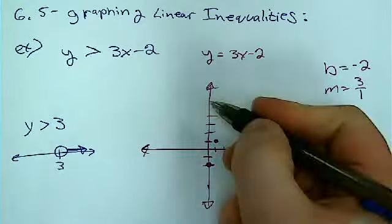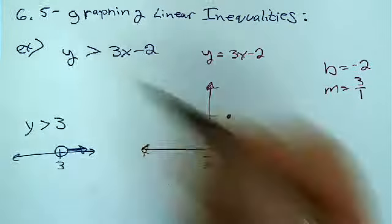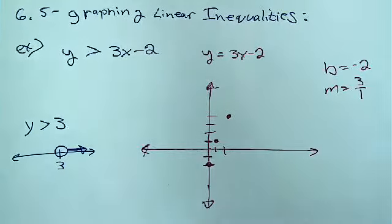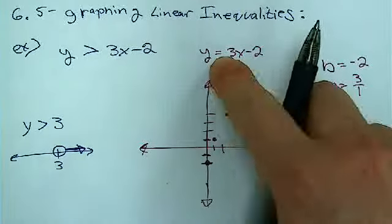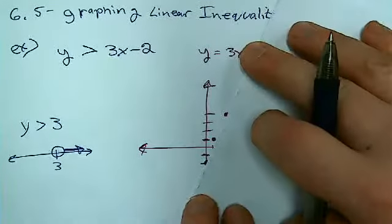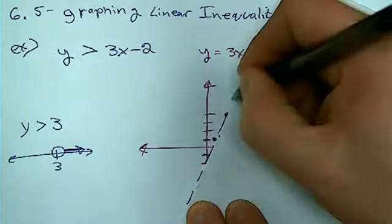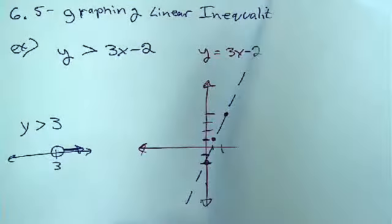So when I go to draw the line, since this right here is strictly greater than, I'm not going to draw a solid line because it doesn't include it. Equals includes. Not equal does not. So I draw a dotted line. So there's my dotted line.